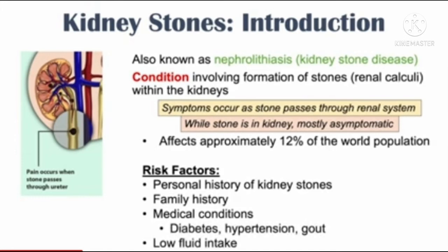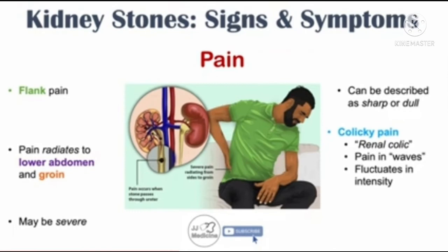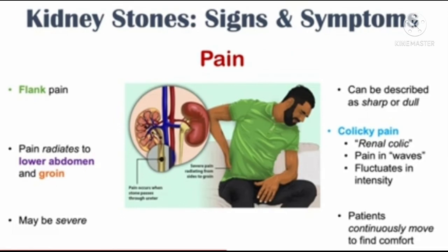Symptoms occur as the stone passes through the renal cavity. The first symptom is pain — flank pain, which irradiates to the lower abdomen and groin. Renal colic pain is pain that comes in waves and fluctuates in intensity. The patient continuously moves to find comfort; the pain may be severe.